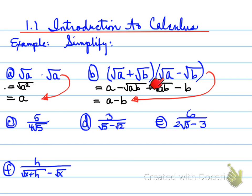And the same for B. If I have root A plus root B, and root A minus root B, you won't have to expand it out like this question. You can go right from the question, right to the answer A minus B.